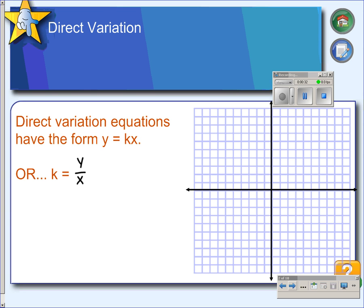So you can have an equation in this form, which is what we're going to do here. Or if you have a table of values, you can divide y by x. And if you always get the same answer for all values in the table when you divide y by x, then it's a direct variation equation.